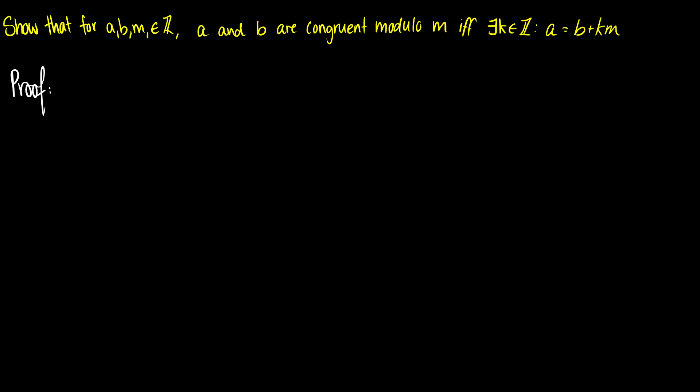So essentially this means a and b are congruent modulo m, this would mean that a is equal to b mod m. And what our end result is, is that we can write this as a is equal to b plus km. So this is an if and only if proof, but what I'll do is I'm going to work it from left to right, and then right to left are just the same steps.